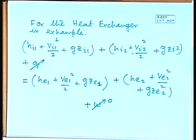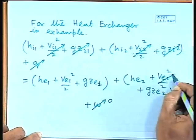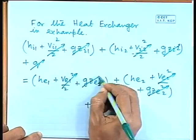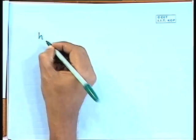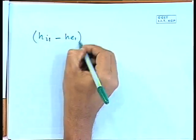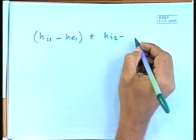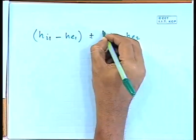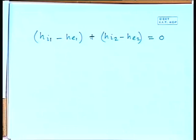In a heat exchanger, the changes in kinetic energy and potential energy are also neglected. So all the kinetic energy and potential energy terms are neglected. Then finally, one can get h_i1 minus h_e1 equal to plus h_i2 minus h_e2, and this is equal to zero.